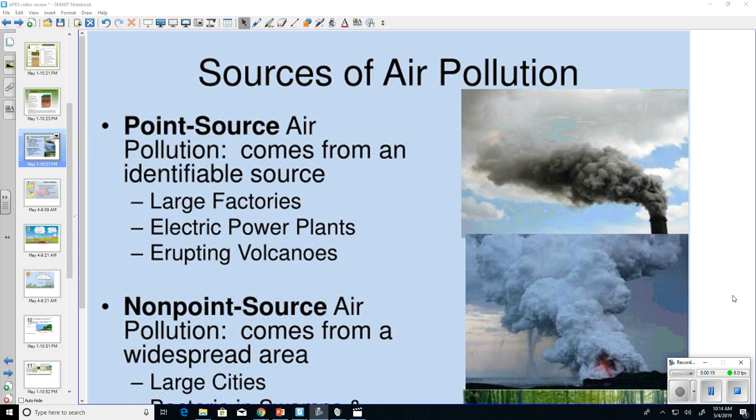Point-source air pollution is pollution that comes from a place where it's identifiable. It comes directly from the source and we can actually observe or see it. A couple examples would be large factories, electric power plants, and erupting volcanoes, which would be a natural source.